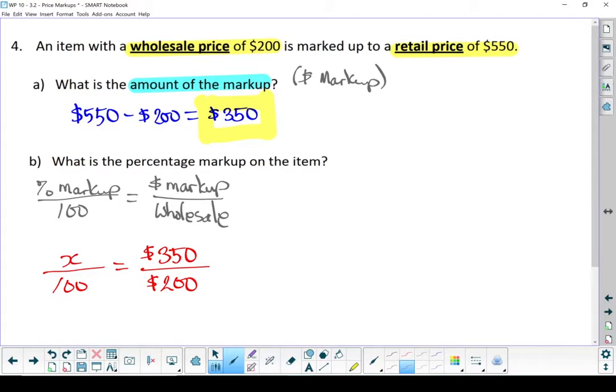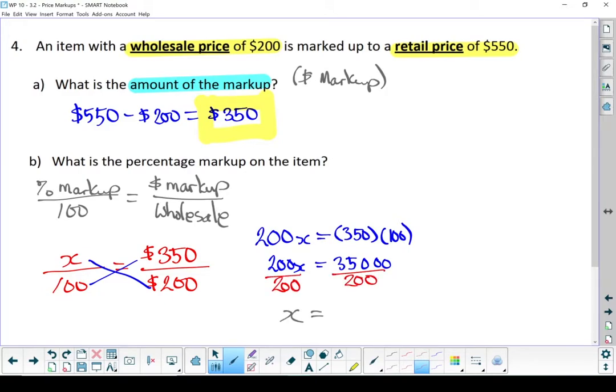Now let's use this and cross-multiply to solve for the percent markup. X times 200 gives me 200X, and 100 times 350. 200X equals 35,000. We're going to divide both sides by 200. 35,000 divided by 200 gives me 175. Now that is a percent markup, so the markup is 175%. That sounds like quite a bit of profit.